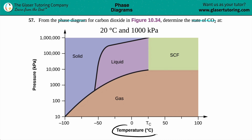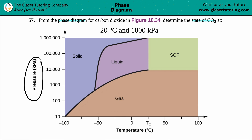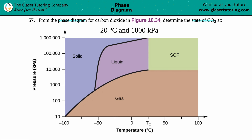The x-axis on this chart is temperature and the y-axis is pressure in kilopascals. How convenient that they gave us Celsius and kilopascals. So in essence we have to find the point (20, 1000) — just like in math, x-comma-y, 20 comma 1000.